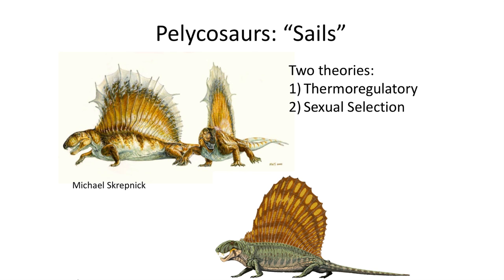The large sails are a unique puzzle as to their function. The two most cited theories are for thermal regulation, giving the animal a surface to warm and cool their body temperature, and sexual selection to attract mates. Having a large sail would attract the opposite sex, and the fittest individuals would produce large sails and more offspring. Some sails have been found with broken spines, indicating that some of these sailback synapsids engaged in combat with each other, possibly for mates.